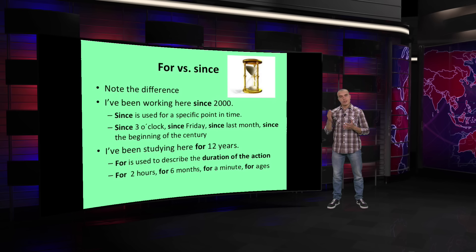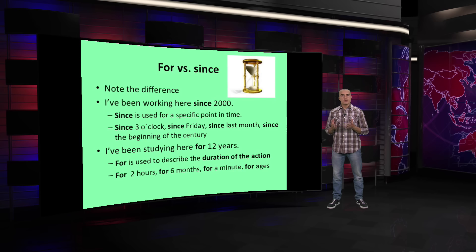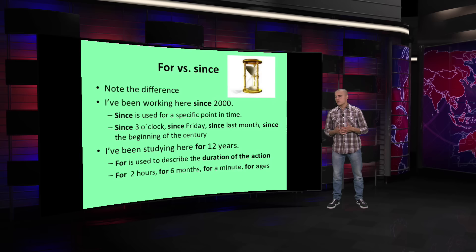FOR differs from SINCE because SINCE gives us the exact point when the action started, while FOR is used to describe the duration of the action. For two hours, for six months, for a minute, for ages — these are all expressions of duration using FOR.